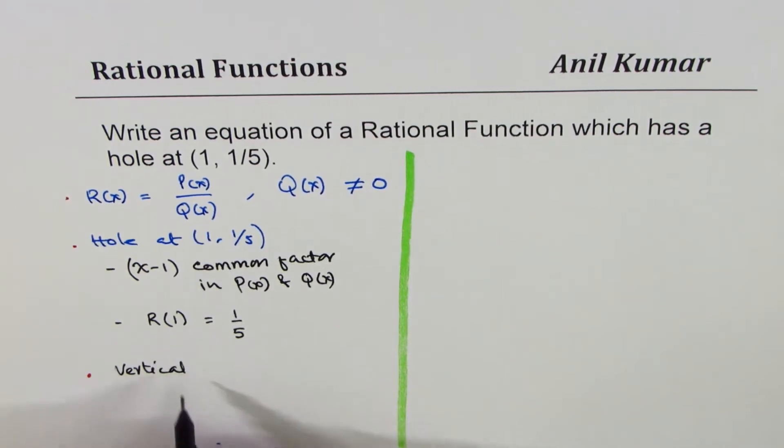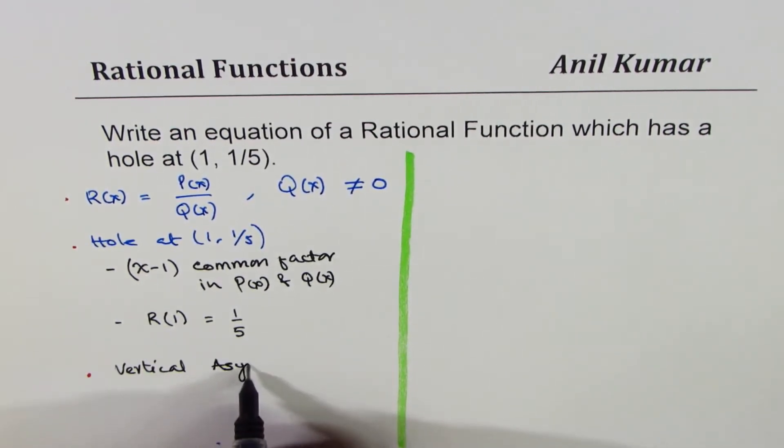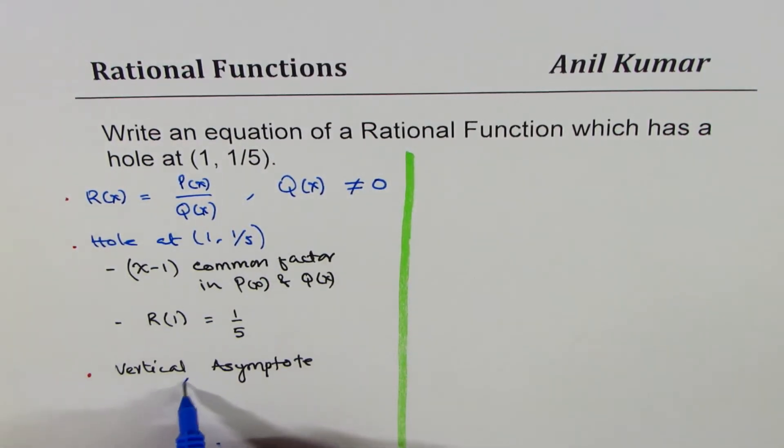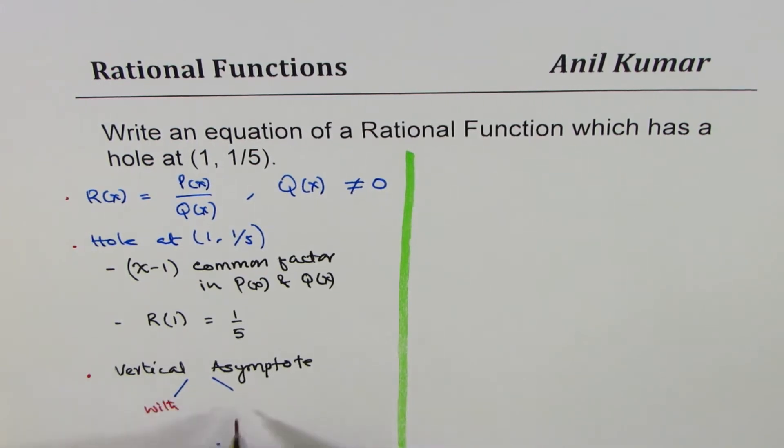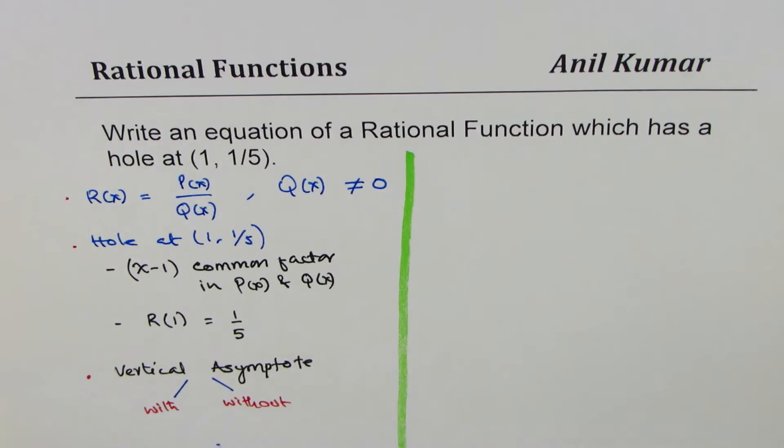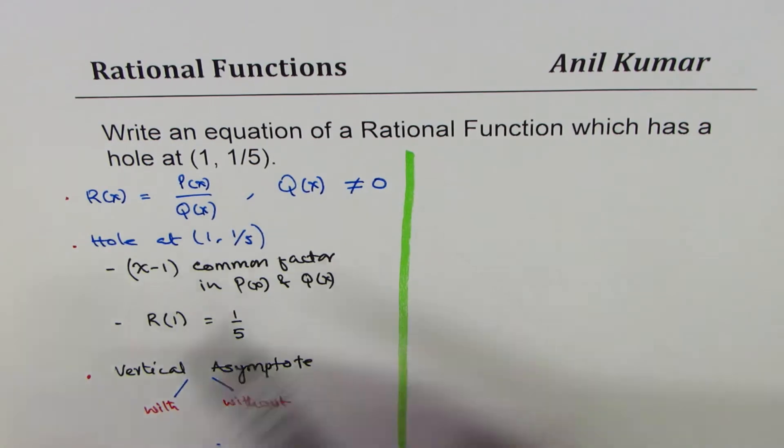An important thing which I want to share with you is that a rational function may have a vertical asymptote or may not have. So that gives me two more conditions and more flexibility in providing you with information about rational functions.